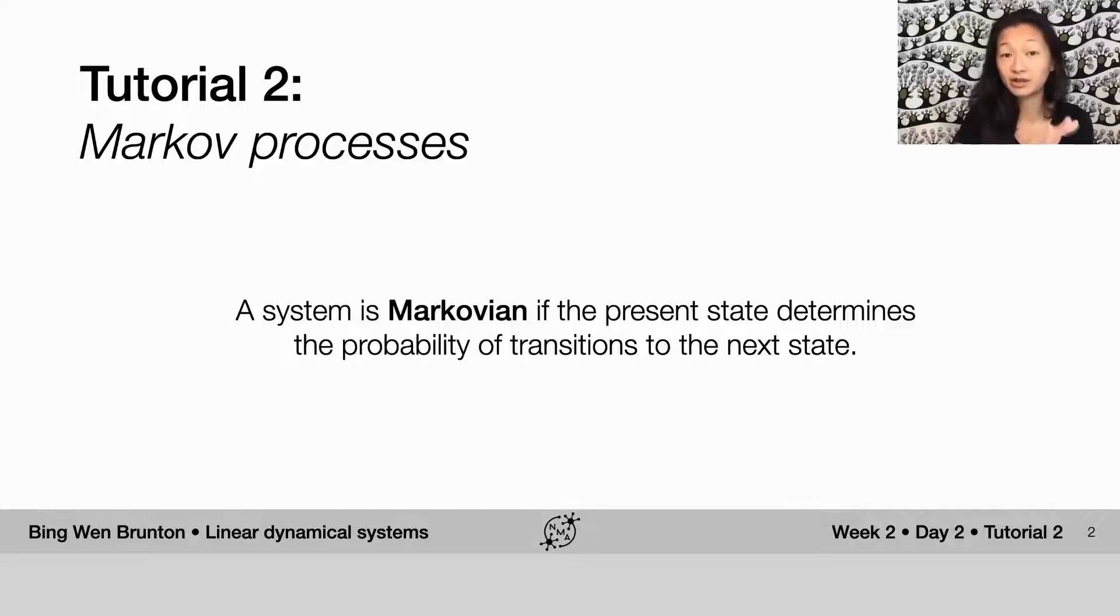I'm just going to define it and we're going to talk a little bit more and have some examples of what this means. So a system is called a Markov process or Markovian if the present state determines the probability of transitions to the next state.